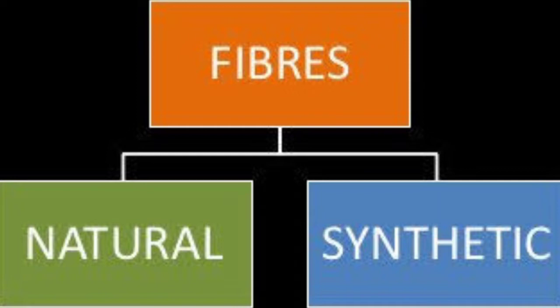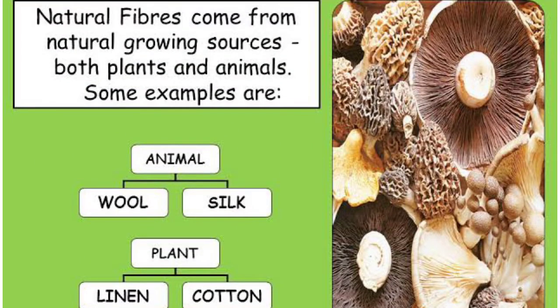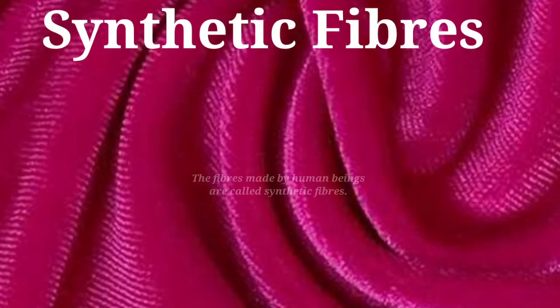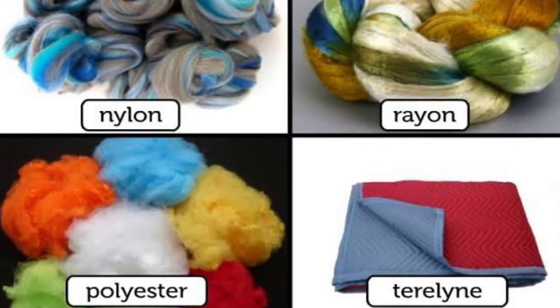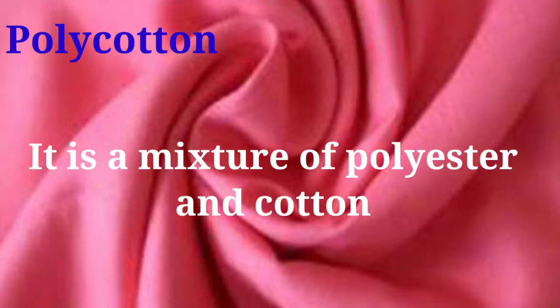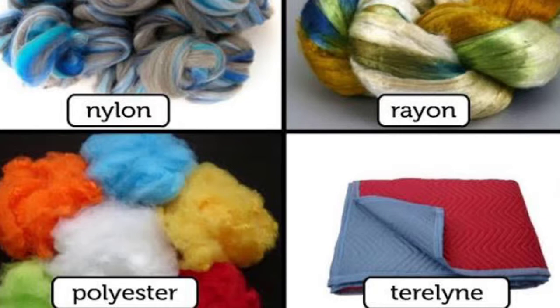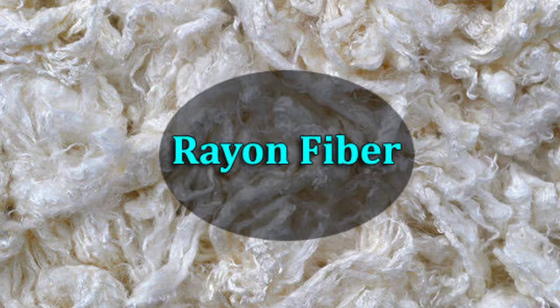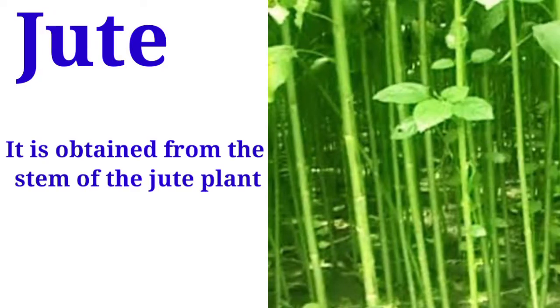There are mainly two kinds of fibers: natural and synthetic. Fibers obtained from plants and animals are called natural fibers — cotton, jute, and silk are examples. Human-made fibers are known as synthetic fibers. Synthetic fibers are sometimes mixed with natural fibers, such as poly-cotton, which is a mixture of polyester and cotton. Rayon, polyester, nylon, and acrylic are all examples of synthetic fibers, and rayon was one of the first human-made fibers.